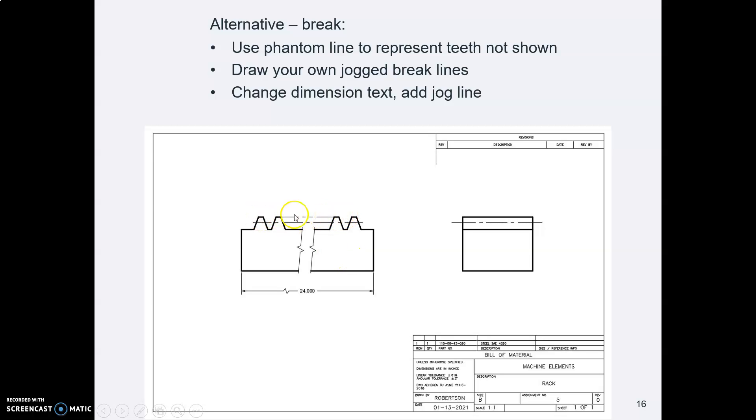And then you connect the missing gear teeth with a phantom line. That means there was something in here. I'm not showing it. Here's a phantom line.